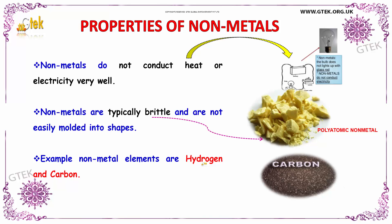Let us move on to the properties of non-metals. Non-metals do not conduct heat or electricity very well. Non-metals are typically brittle and are not easily molded into shapes — these polyatomic non-metals are very difficult to mold into particular shapes. The most common examples are hydrogen and carbon.